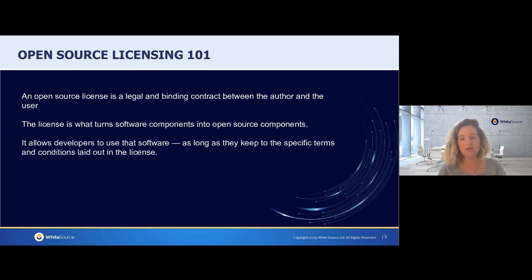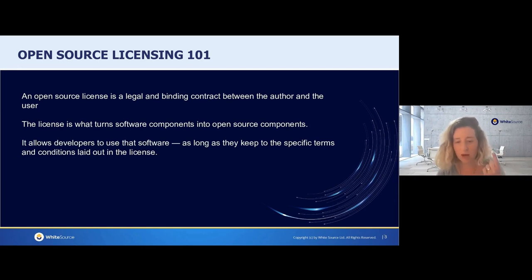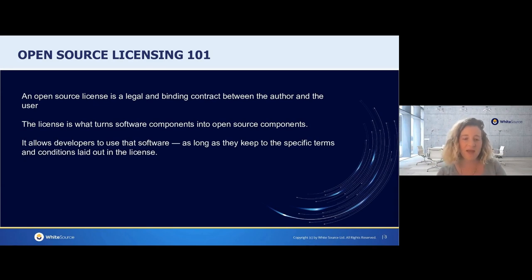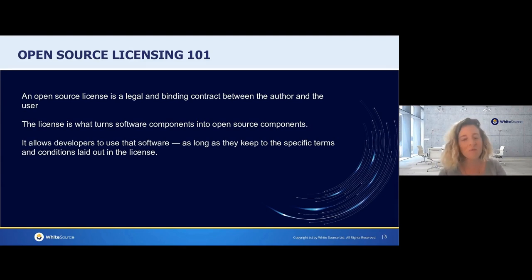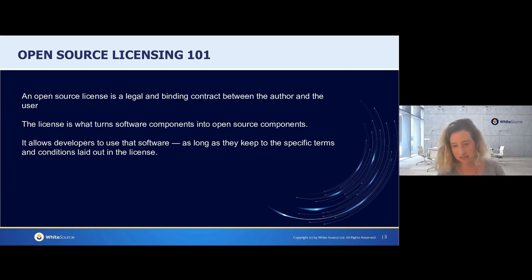The concept of a license is like a legal agreement that's binding between the author of that open source — and the author doesn't have to be one person; it can be hundreds of maintainers — and the user, the person who chooses to use that open source. This is what actually allows us as developers, as software people, to use that software and combine it into our code. But this is not always true. In some cases, even though the code is out there and we can see it, we cannot really use it based on its terms.